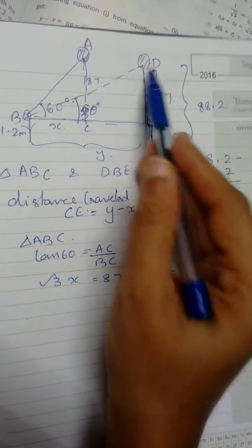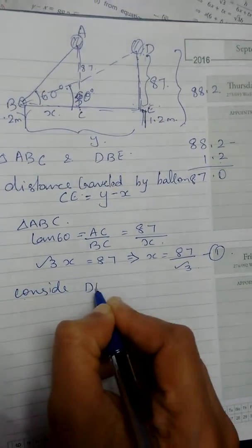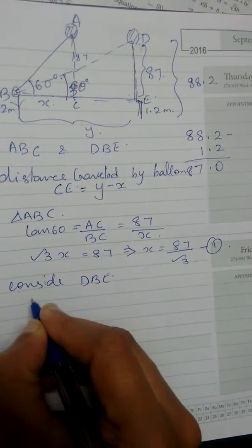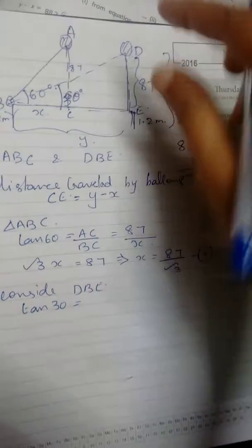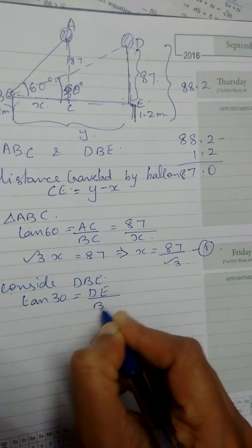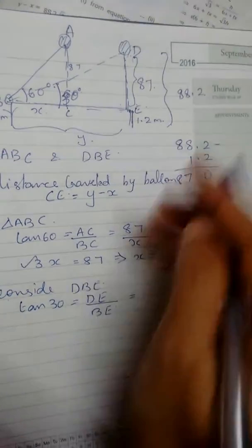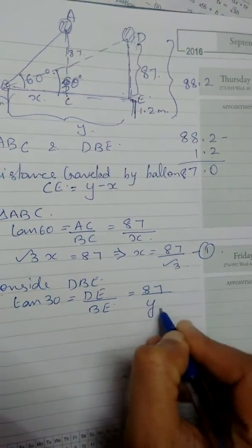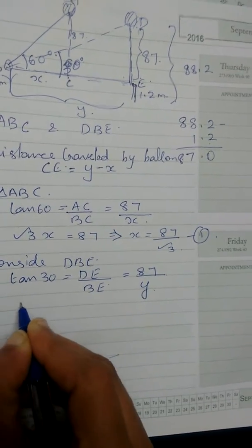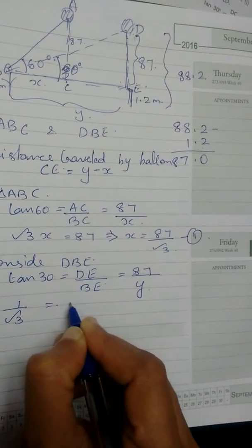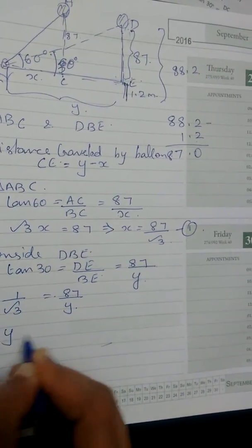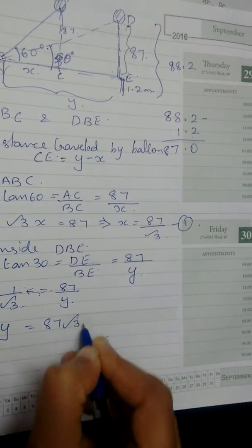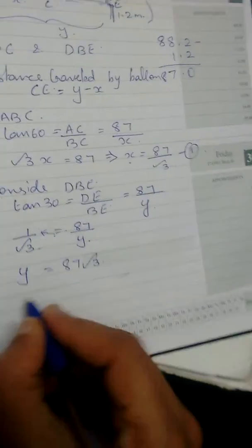Now consider triangle DBE. Tan 30 equals DE by BE. DE equals 87, and BE equals Y. So tan 30, which is 1 by root 3, equals 87 by Y. Therefore Y equals 87 root 3.